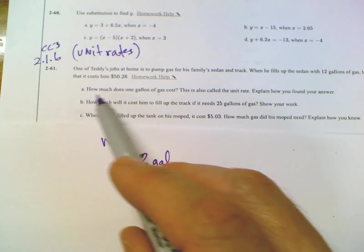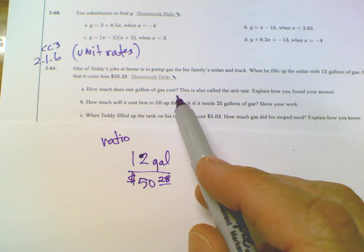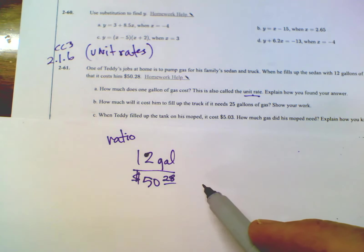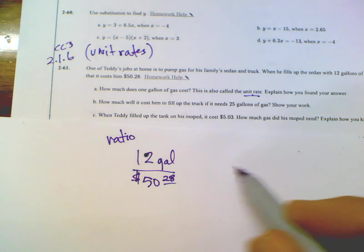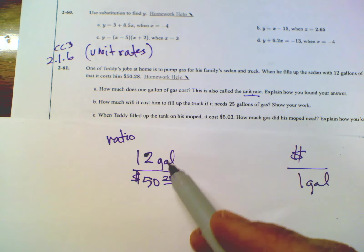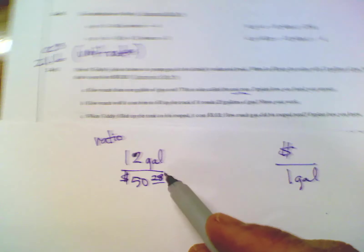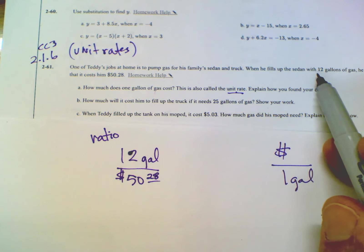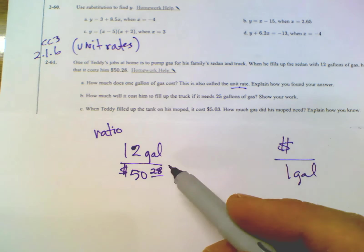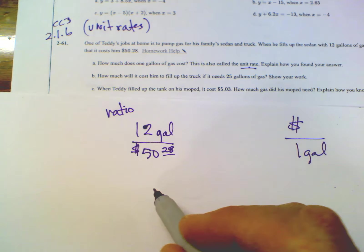So on A though, A says, how much does one gallon of gas cost? This is also called the unit rate. So now this is where I have to find the unit rate. But I want to find the unit rate where it's one gallon of gas. So what I want is I want to know the cost for every one gallon. Well, if you notice here, I have gallons on top and money on bottom. And I just wrote it that way because that's what was listed. It gave me gallons before it talked about money. So I'm going to take this ratio and just rewrite it where gallons are on the bottom and money's on top.